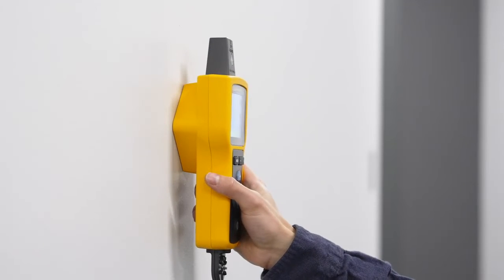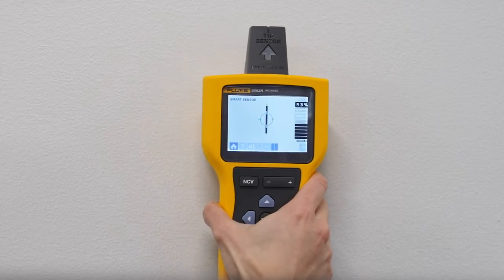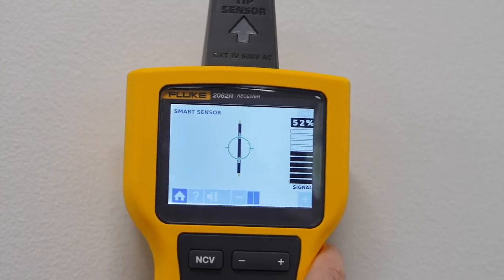The transmitter automatically senses whether the system you're tracing is energized or de-energized, which means you can trace wires in either system. There's no need to turn off critical equipment or switch power, keeping you safer when possible.